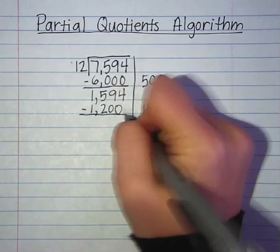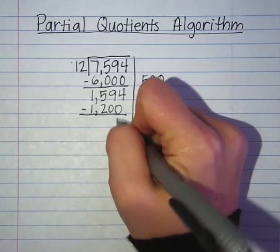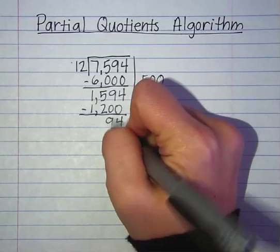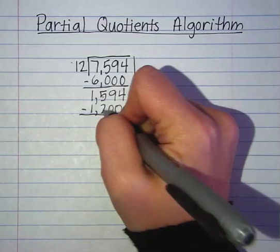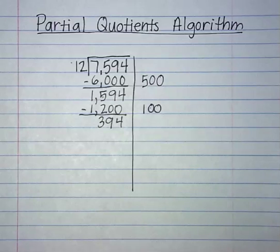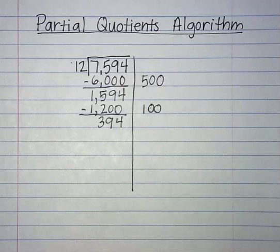Subtract. 4 minus 0 is 4, 9 minus 0 is 9, 5 minus 2 is 3, 1 minus 1 is 0. So now I have 394.